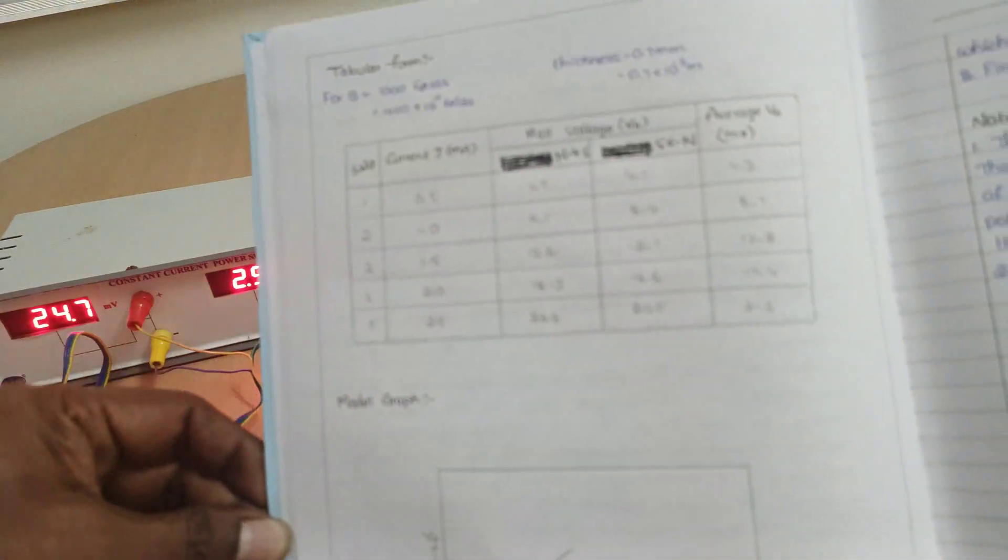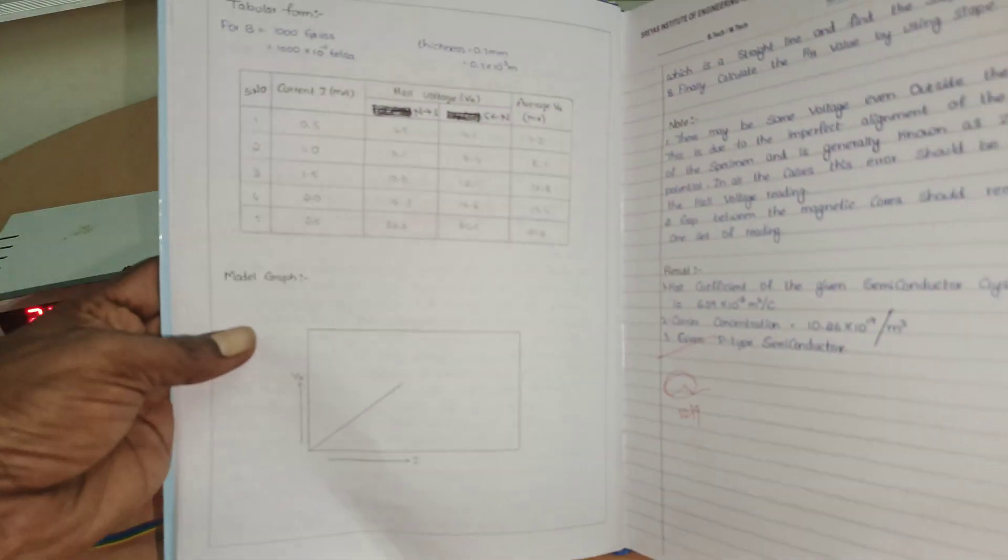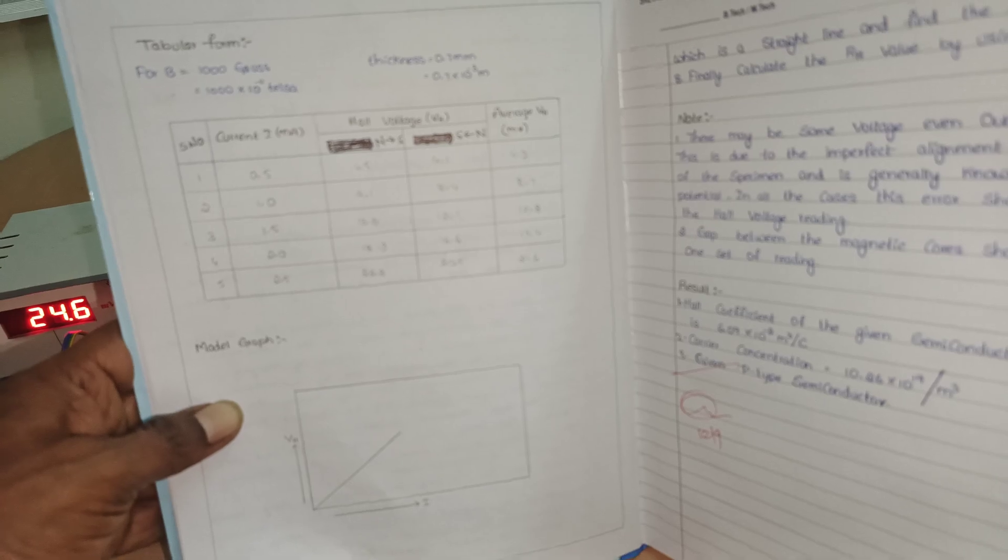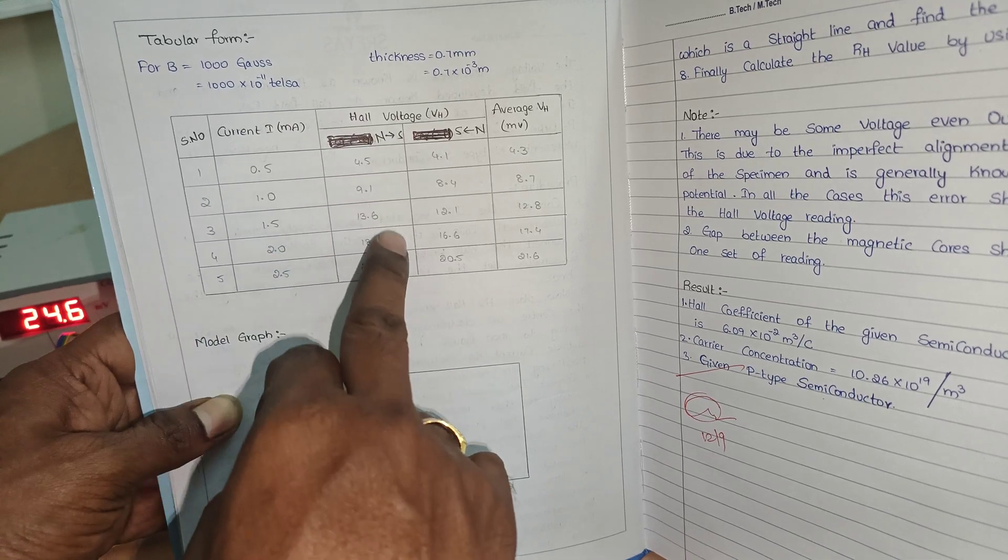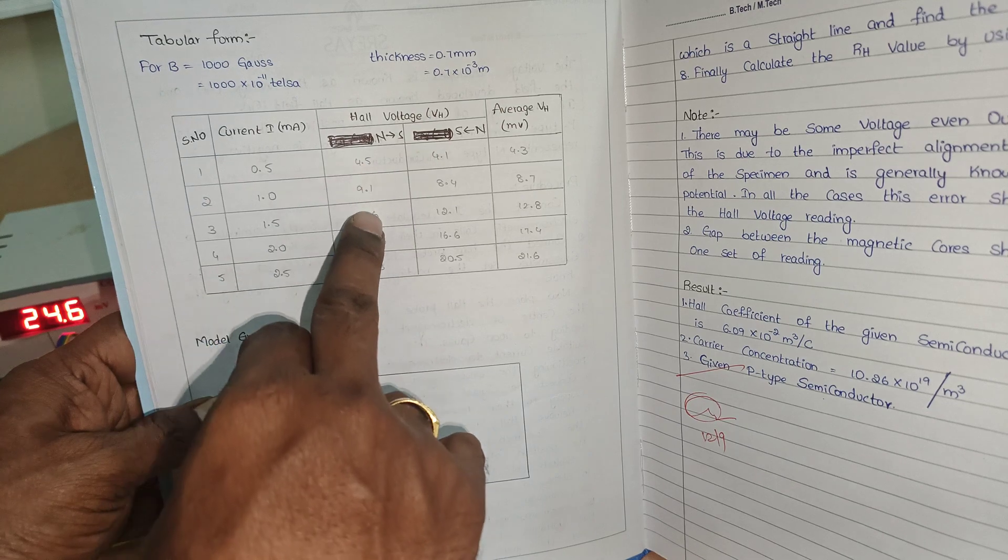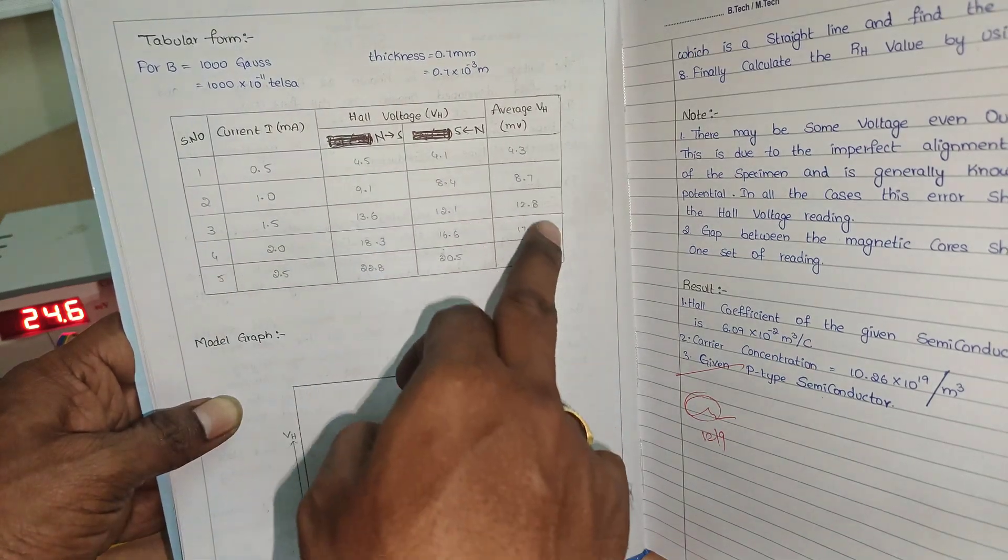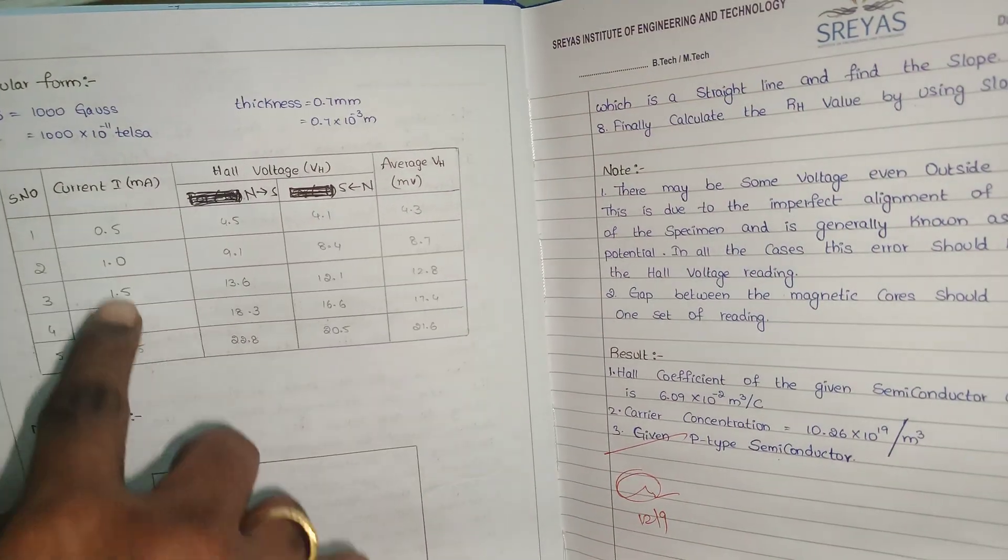This is the tabular form. Here you can see the values. Here we have taken the Hall voltage values 4.5 and 9.1. After changing the direction of the magnetic field, again we have to note down average of these two, we have to write in this column. Once you get all these readings, we have to draw the graph between current versus Hall voltage.